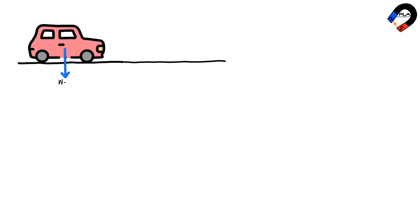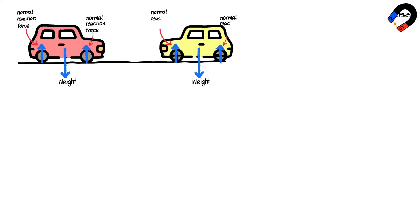A car at rest has weight acting downward and normal reaction forces acting upward at its wheels. When a car is moving, there is weight acting downward, normal reaction forces acting upward at its wheels, thrust force from the engine acting forward, and air resistance acting backward.